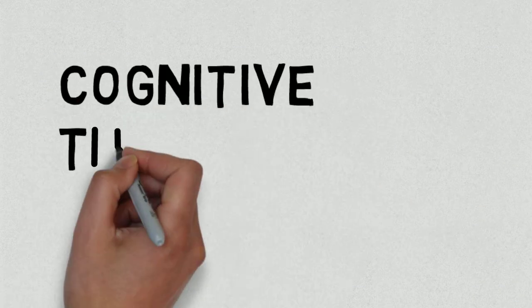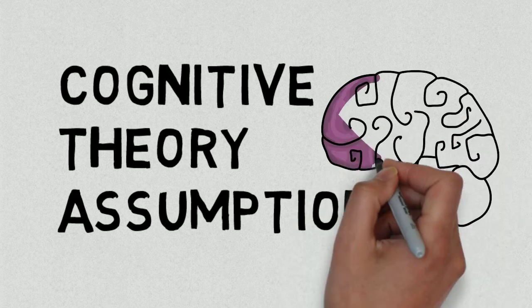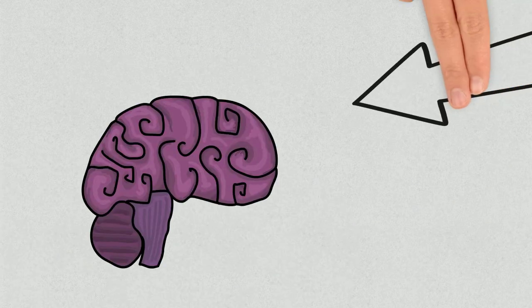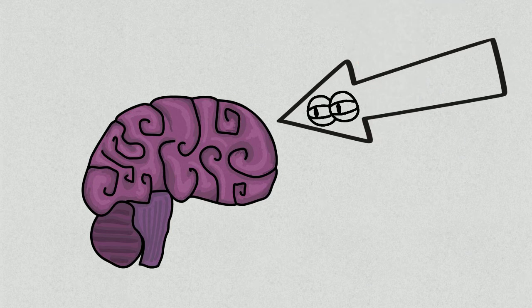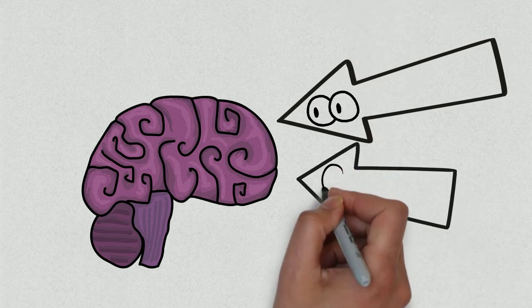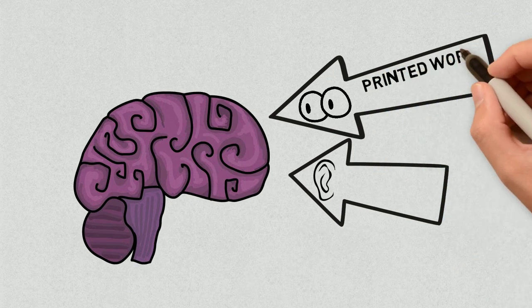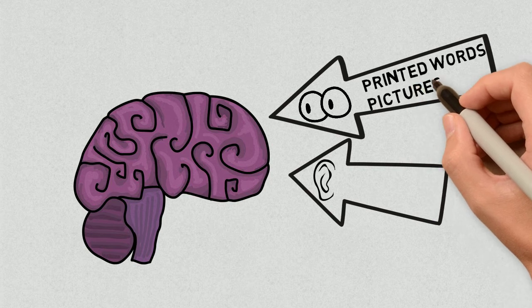The cognitive theory of multimedia learning is based on three assumptions. Cognitive science and research tells us that our brains are wired to receive information in two channels, visual and the other channel is auditory. Visual information can come to us in two ways, printed words or pictures.